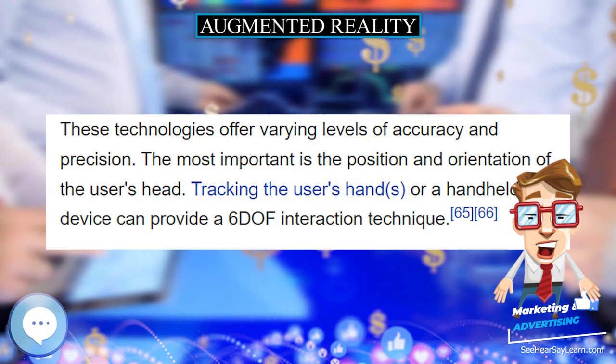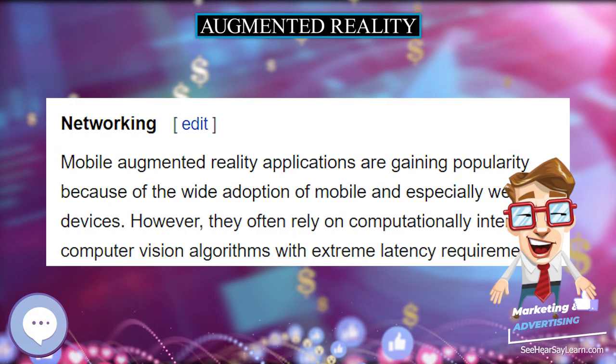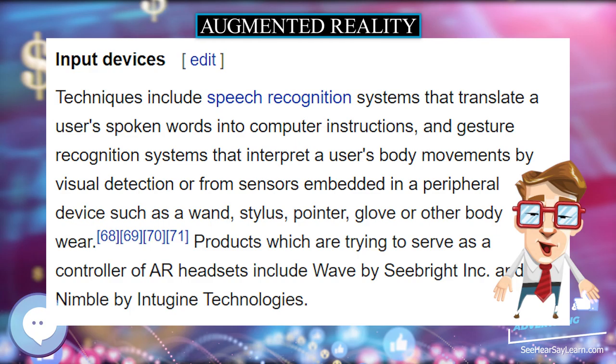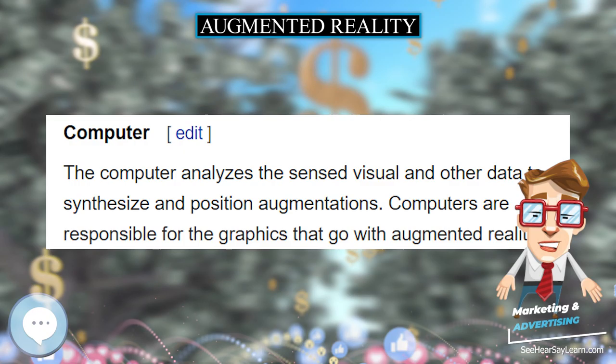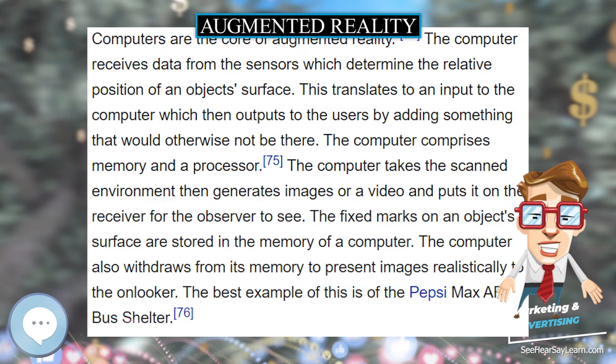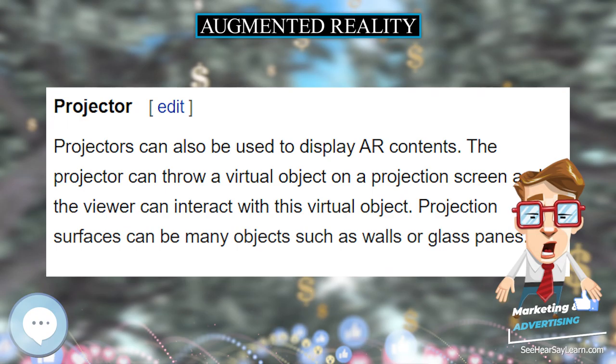Some AR applications such as Augment enable users to apply digital objects into real environments, allowing businesses to use augmented reality devices as a way to preview their products in the real world. Similarly, it can also be used to demo what products may look like in an environment for customers, as demonstrated by companies such as Mountain Equipment Corp, who use augmented reality to allow customers to preview what their products might look like at home through the use of 3D models. AR differs from VR in that in AR, part of the surrounding environment is actually real, just adding layers of virtual objects, whereas in VR, the surrounding environment is completely virtual.